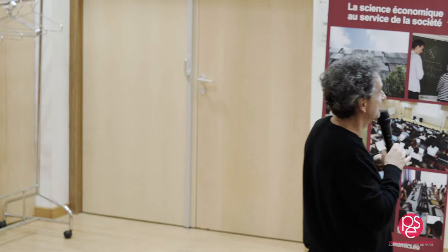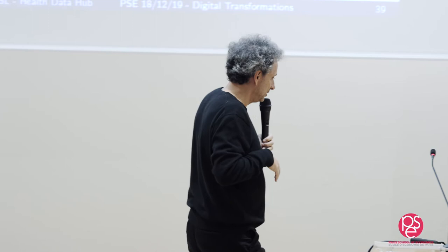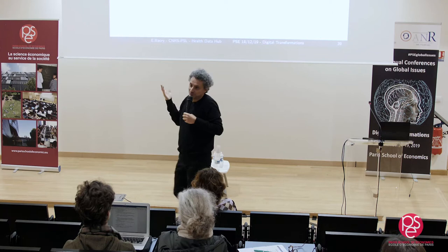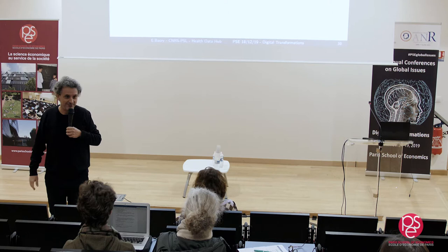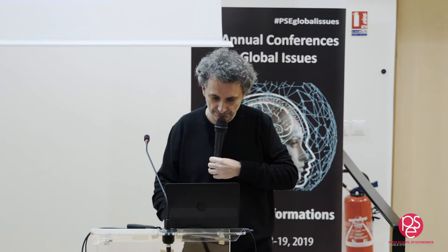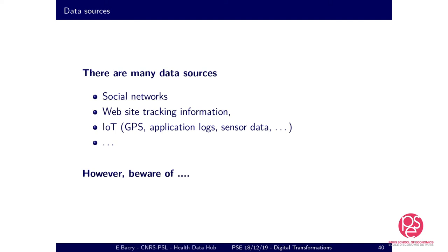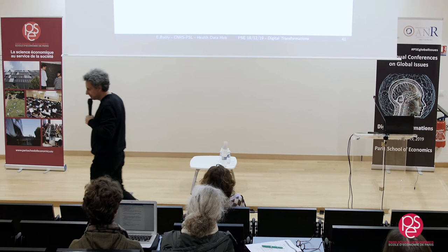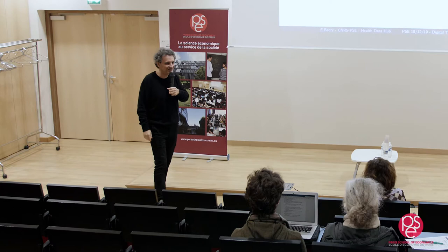There are serious fairness problems. We know about US states where judges use algorithms to decide whether someone should go to jail, and there are huge concerns about bias regarding whether a person is Hispanic or African American. There are important fairness problems. There are many data sources — social networks, website tracking, IoT, and so on. You have to be aware that there is GDPR in Europe with restrictions that aren't fully followed today, but they're still there.